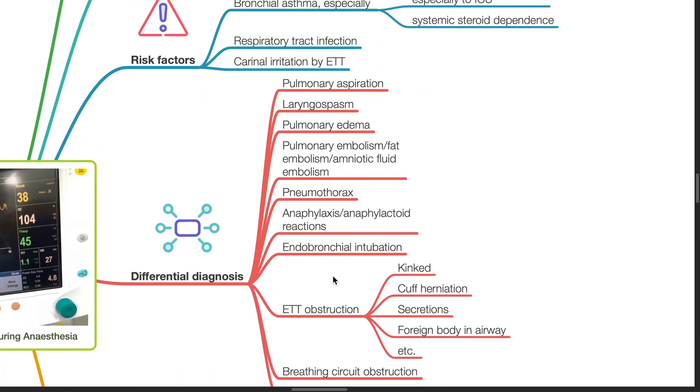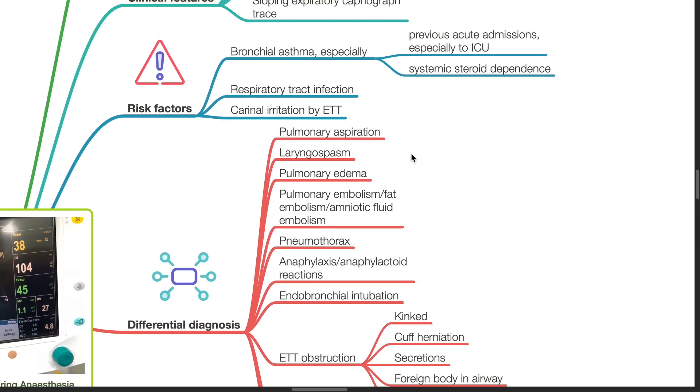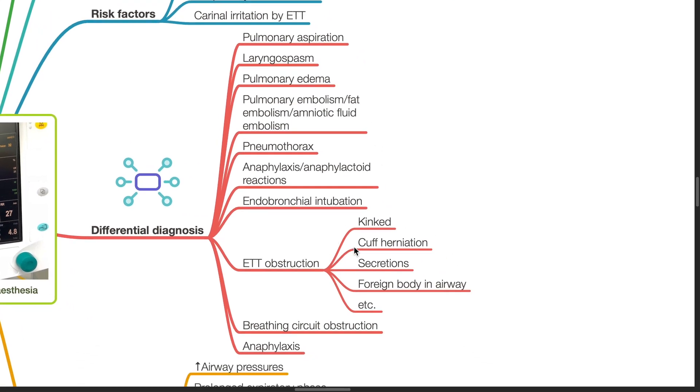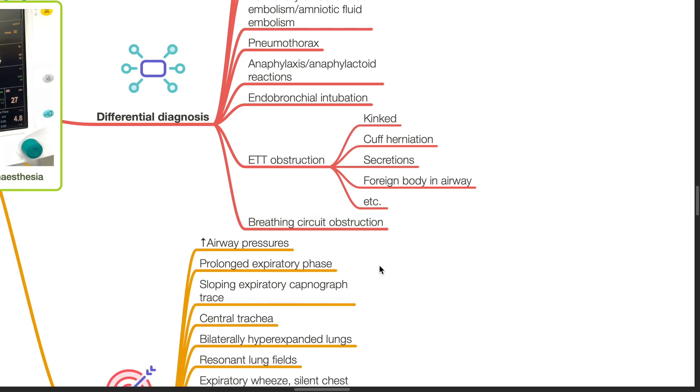Differential diagnosis: pulmonary aspiration, laryngospasm, pulmonary edema, pulmonary embolism, fat embolism or amniotic fluid embolism, pneumothorax, anaphylaxis or anaphylactoid reactions, endobronchial intubation, ETT obstruction secondary to kinking, cuff herniation, secretions, foreign body, and breathing circuit obstruction.